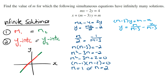When m is equal to 1 or 2, the gradient of the two lines will be the same, which satisfies the first condition. Next, we need to test for the second condition to see which value of m will result in the same y-intercept.